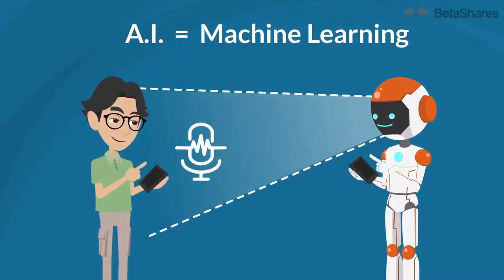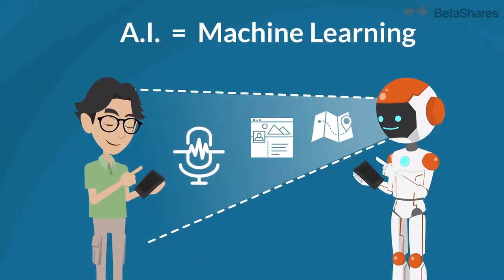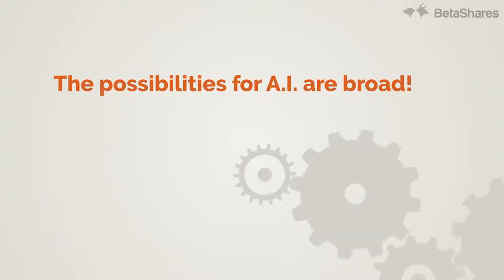Everyday examples in use today are Siri, Facebook, and Google Maps. However, the possibilities for AI are broad.